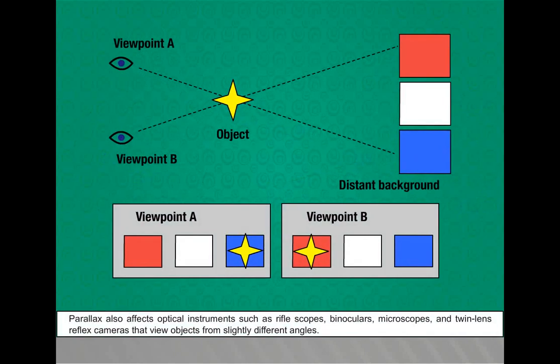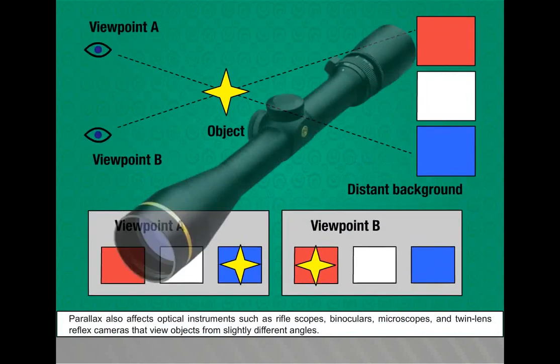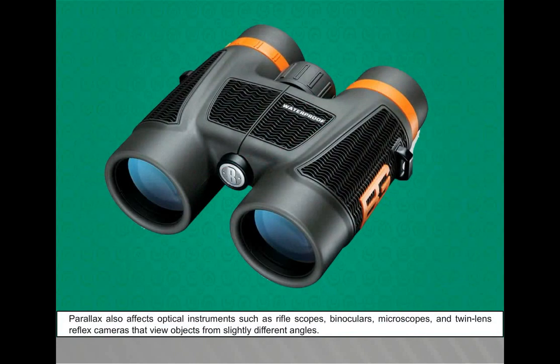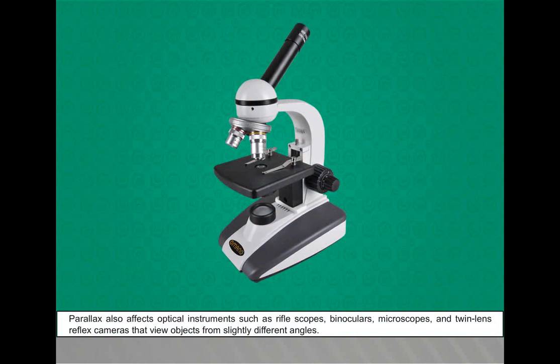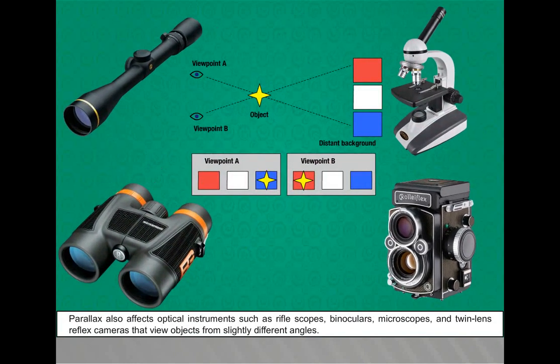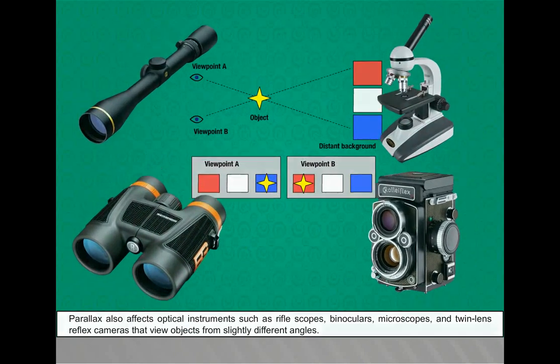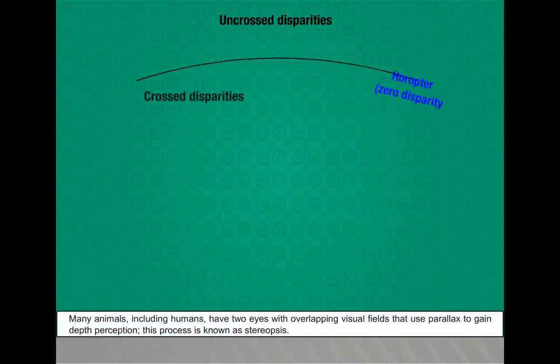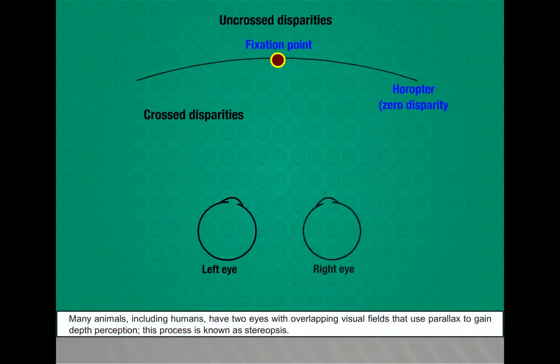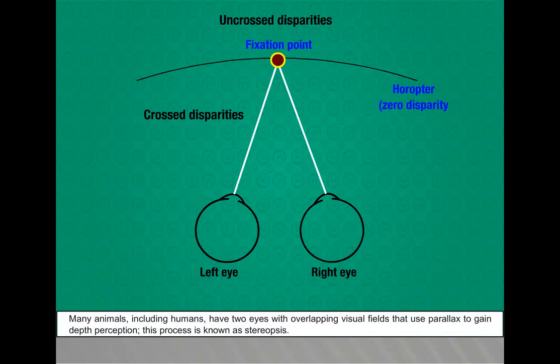Parallax also affects optical instruments such as riflescopes, binoculars, microscopes, and twin-lens reflex cameras that view objects from slightly different angles. Many animals, including humans, have two eyes with overlapping visual fields that use parallax to gain depth perception. This process is known as stereopsis.